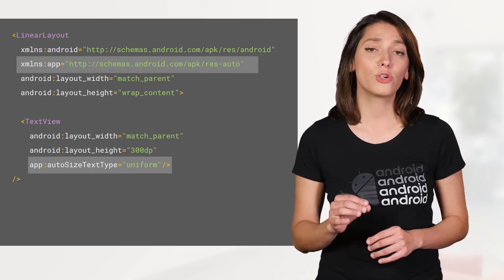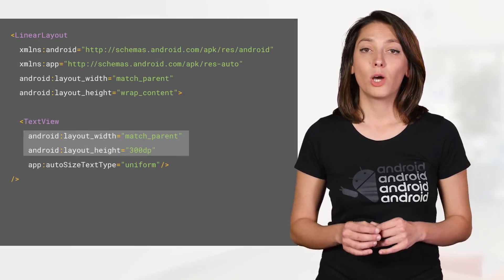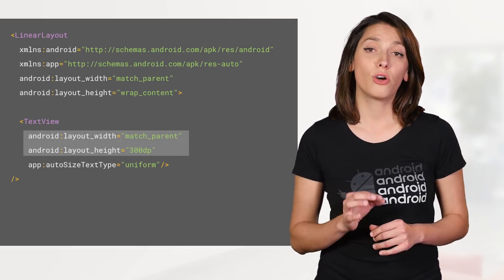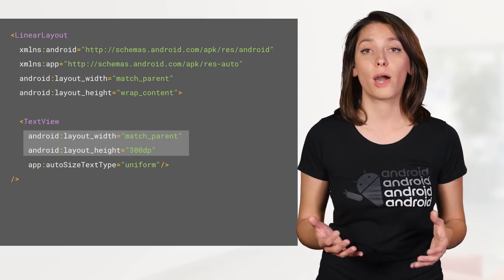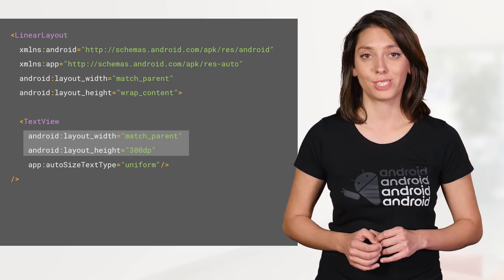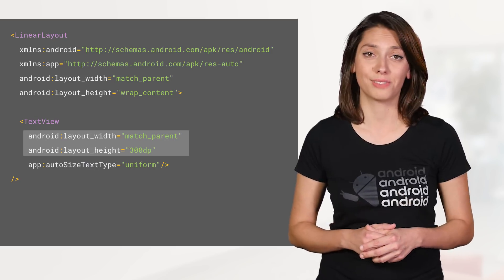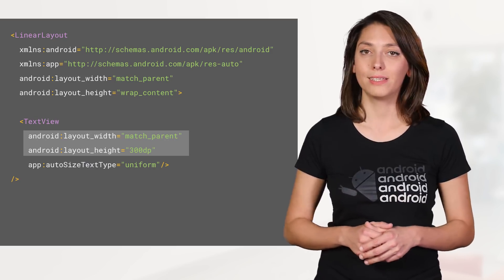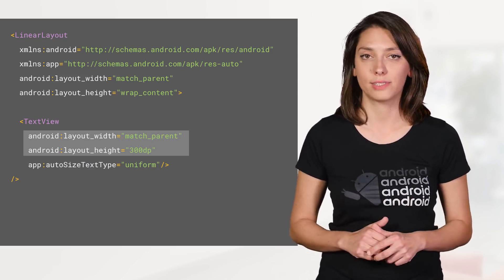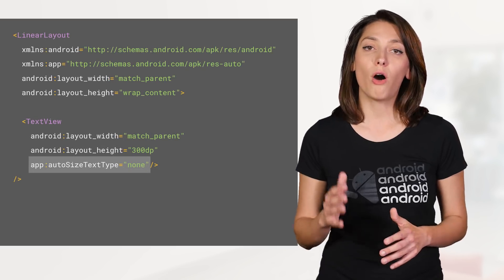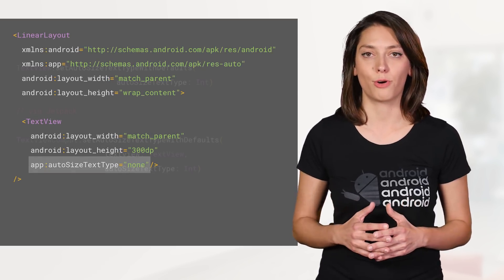When using Jetpack, make sure you use the app namespace. Note that you should not use wrap_content for layout width or layout height for a TextView set to AutoSize, since it may produce unexpected results. Instead, use match_parent or a fixed size. Turn off autosizing by selecting none instead of uniform.